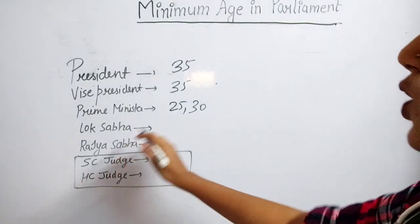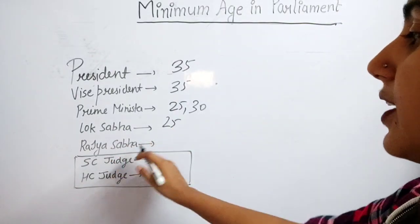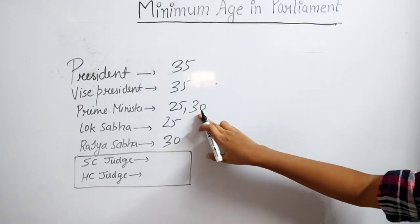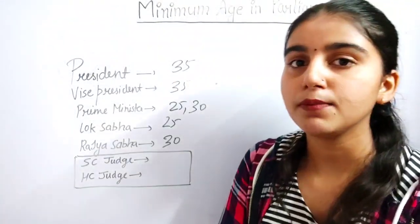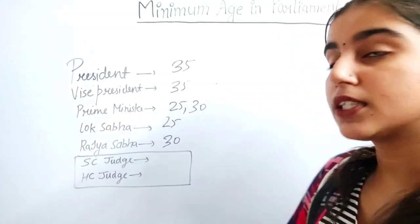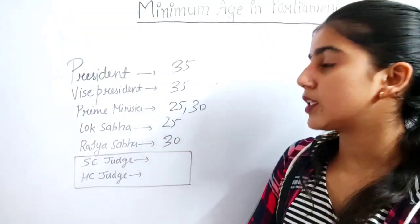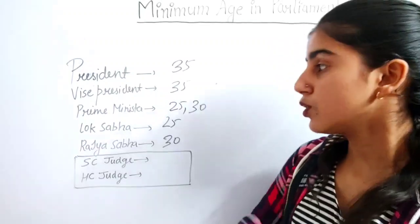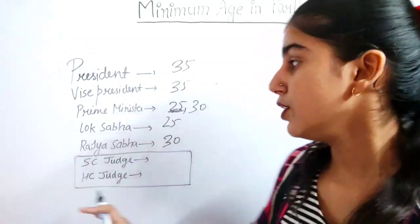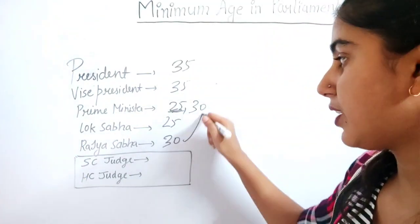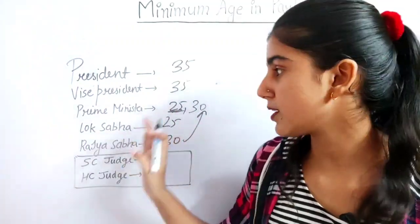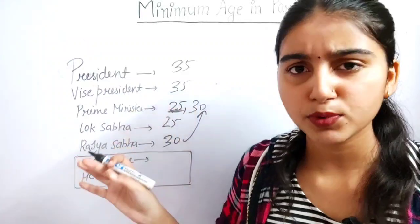Now the Prime Minister can be 25 or 30 depending on their house membership. If you want to become a member of the Lok Sabha, you need to be 25. If you want to become a member of the Rajya Sabha, you need to be 30. The Prime Minister is the leader of the majority party. So if the PM is from the Lok Sabha, the age is 25, and if from the Rajya Sabha, the age is 30. If a general question is asked, you should put 25.